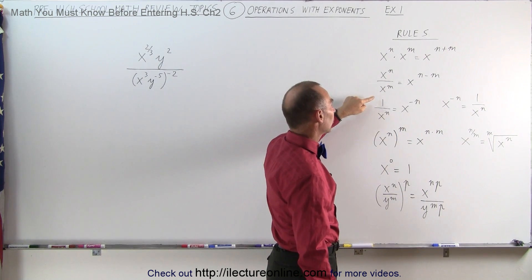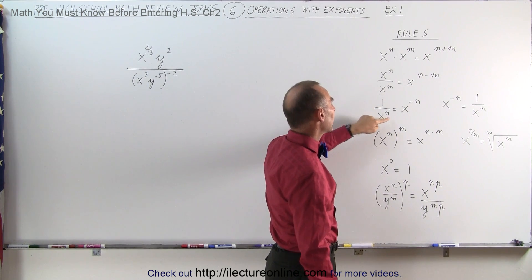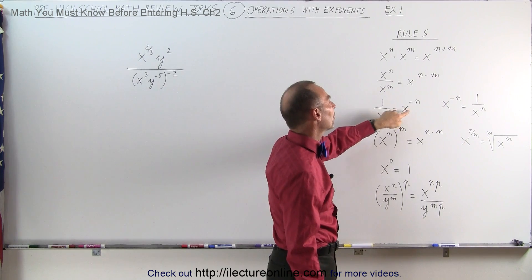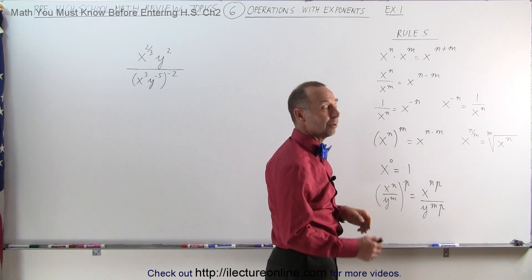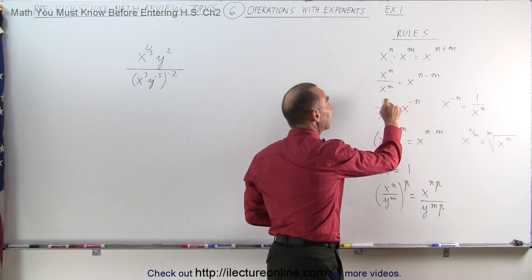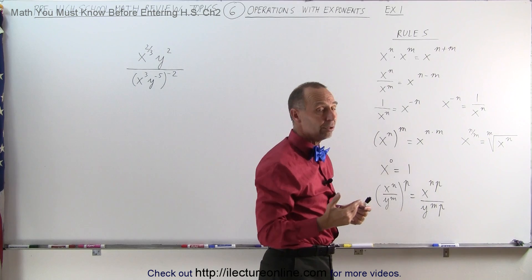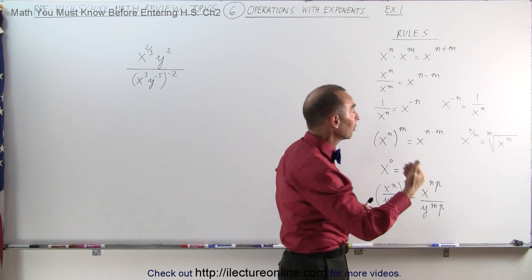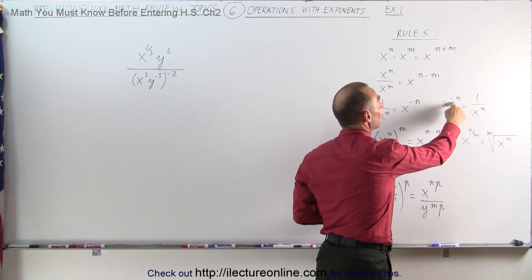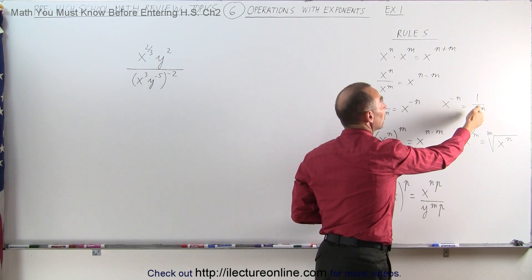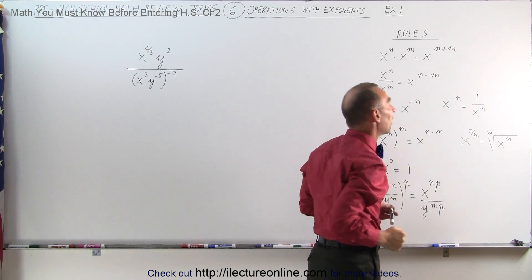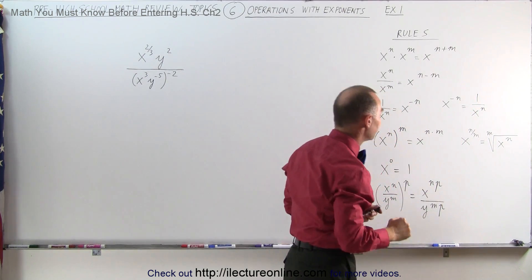If you have something like 1 over x to the n power, this can be written as x to the minus n power by simply bringing it to the numerator — it changes the sign. Or, if you want to bring it to the denominator, x to the minus n brought to the denominator becomes 1 over x to the positive n.